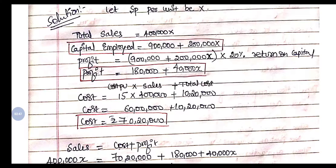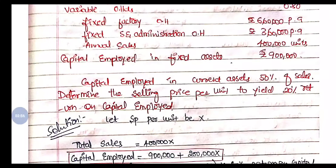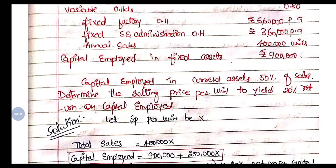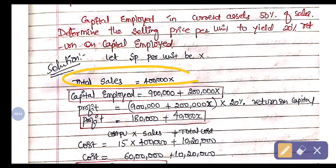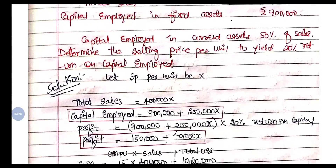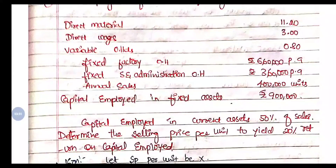Now let's look at the solution. We need to calculate the selling price per unit. Since we don't know the selling price, we'll consider it as x. The total sales amount will be 4 lakh units × x. So total sales = 4 lakh x.